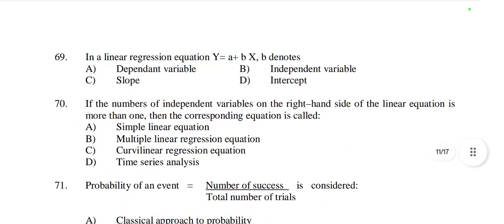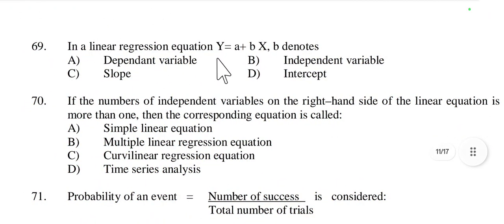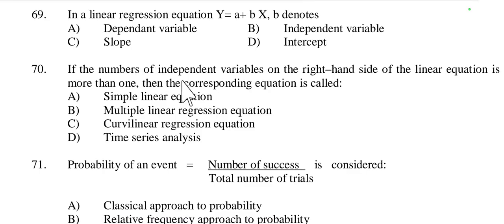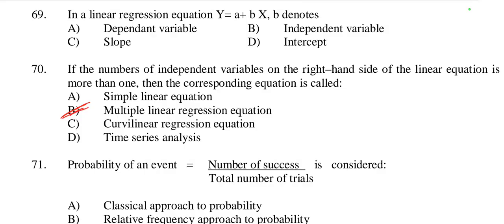Question 69: In a linear regression equation Y = a + bX, b denotes the slope — the rate of change, equivalent to the MPC (Marginal Propensity to Consume) concept. Question 70: If the number of independent variables on the right-hand side of a linear equation is more than one, the corresponding equation is called a multiple linear regression equation. It is used to model the relationship between two or more independent variables and a dependent variable.